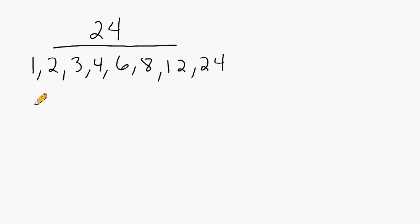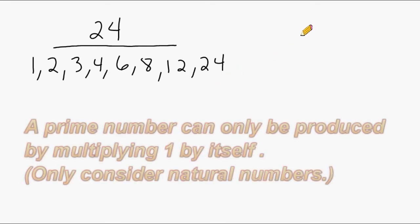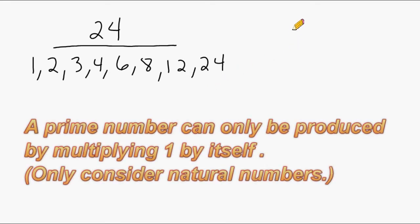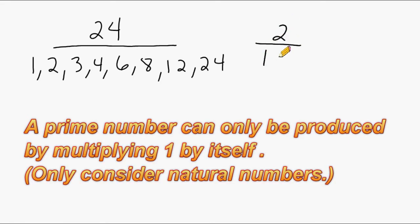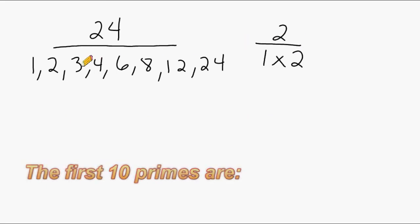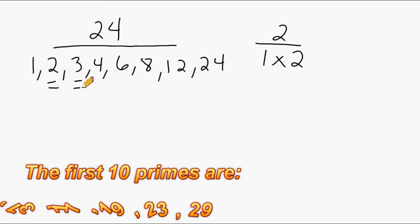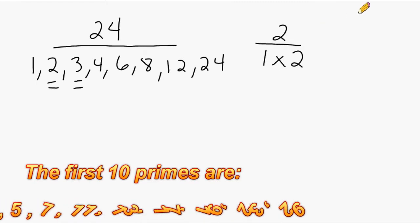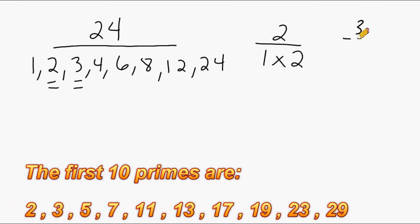Now out of all of these factors, some of them are prime factors. A prime factor or a prime number is a number that can be produced by multiplying only the number 1 by itself to make that number. So 2 is a prime factor of 24 and so is the number 3. To produce the number 3 you can only do 1 times 3 to make it.